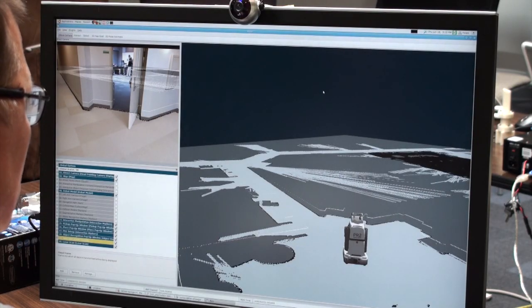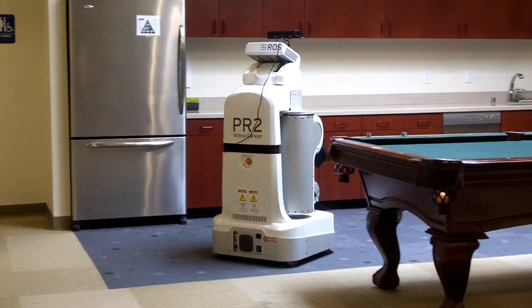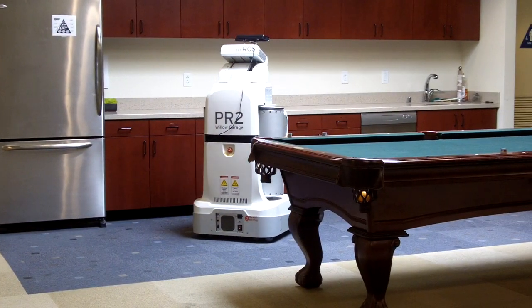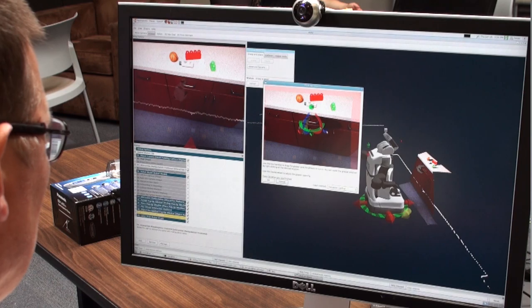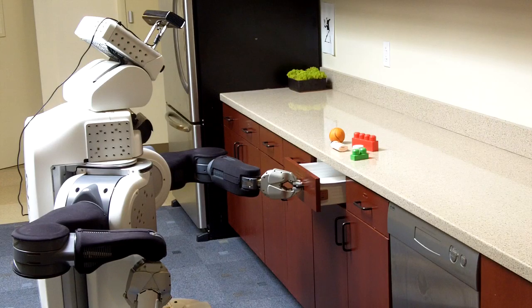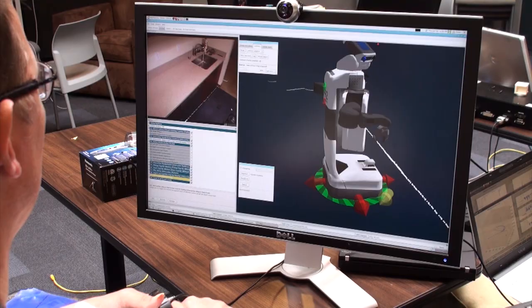The interfaces we have developed allow Henry to interact with the robot's autonomous capabilities, such as navigating around the building, avoiding obstacles, and grasping and manipulating objects. He has already made the robot put objects in a drawer from another room.